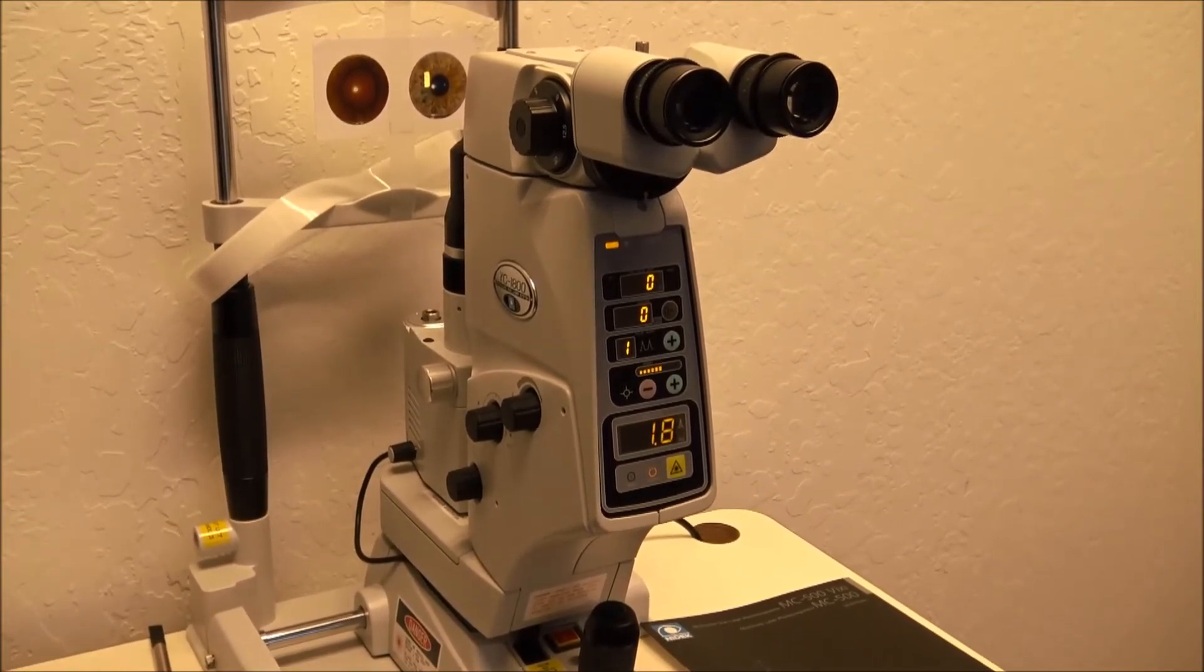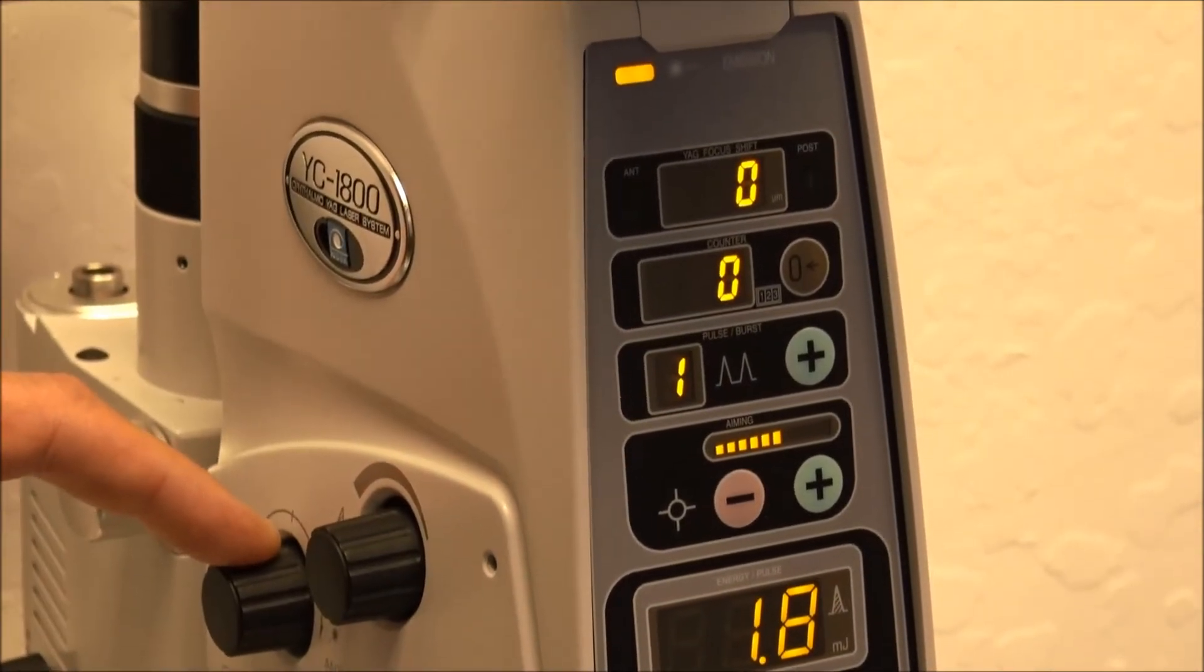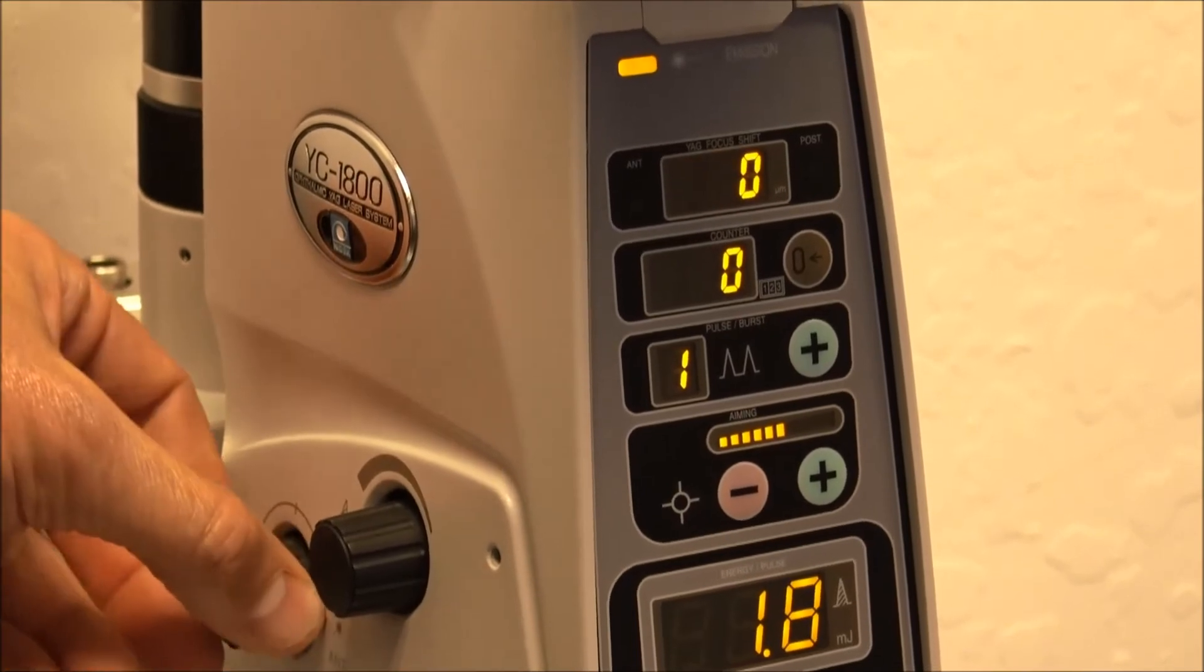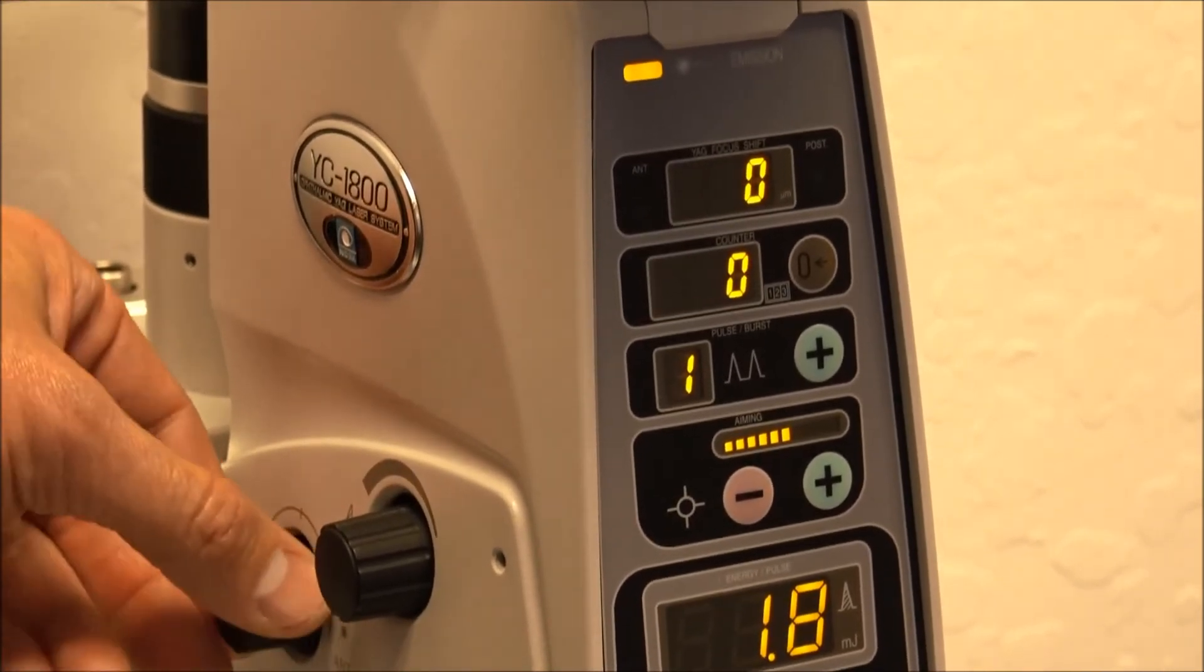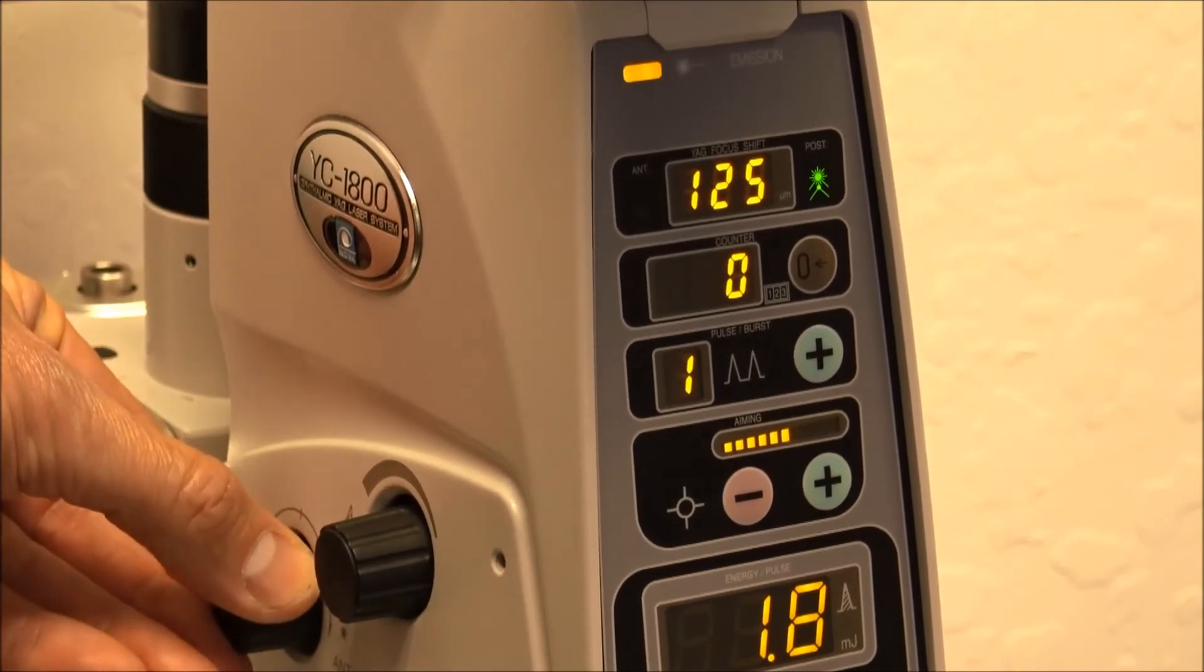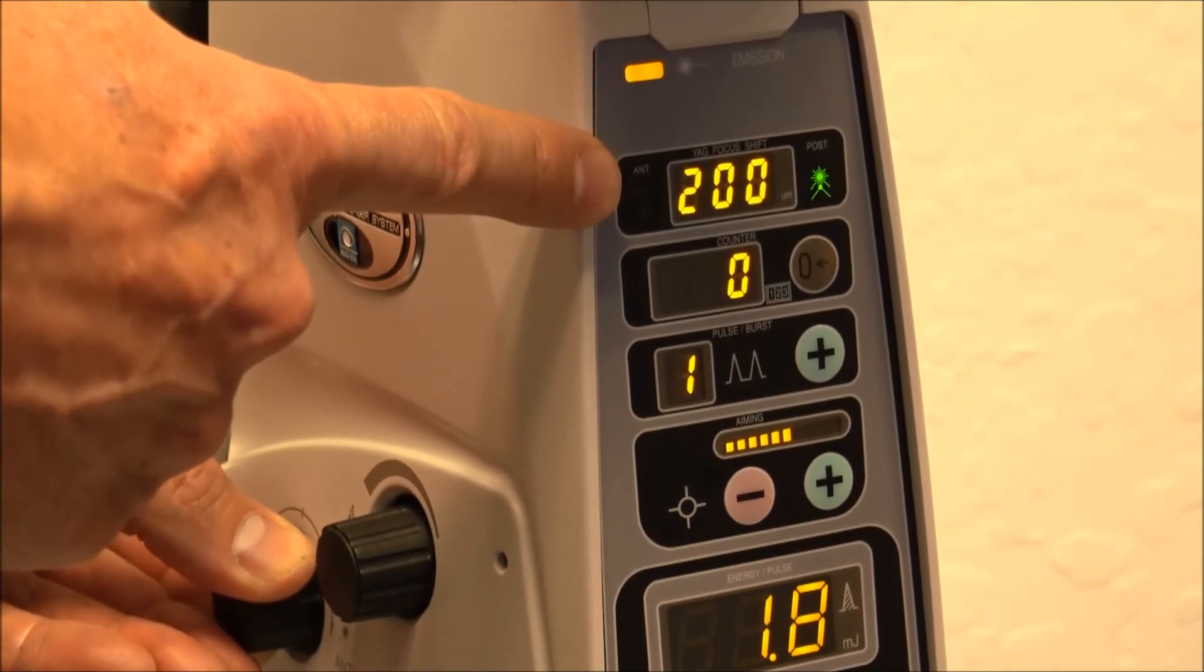To utilize the offset, you will use the second knob on either side of the YC1800 YAG laser. By rotating the knob to a hard click, you will increase or decrease by 125 microns quickly. And by rotating slowly, you can increase or decrease in increments of 25 microns.